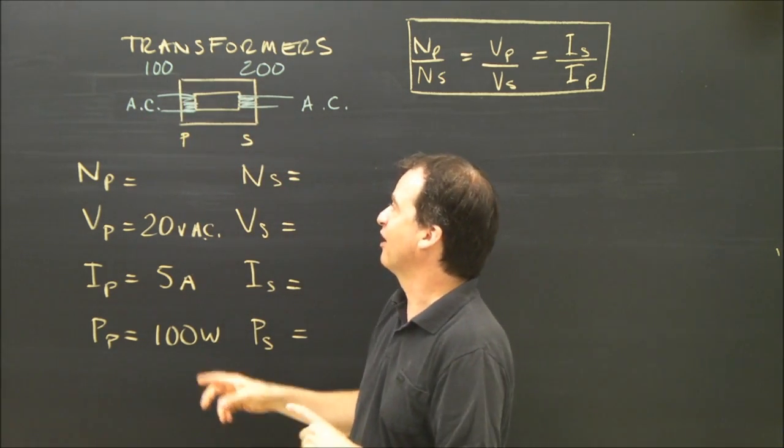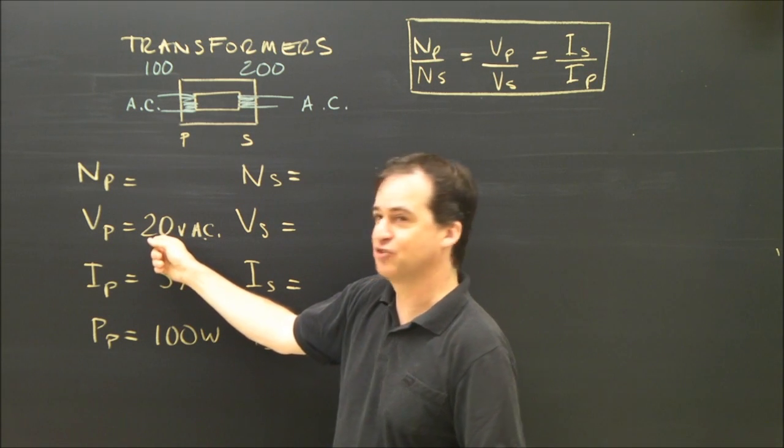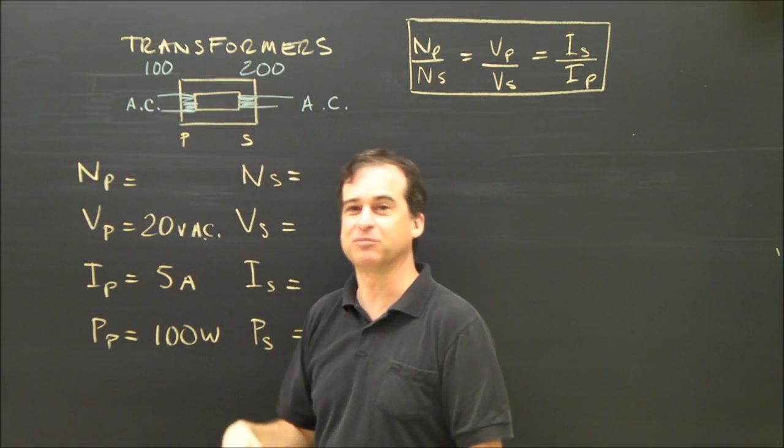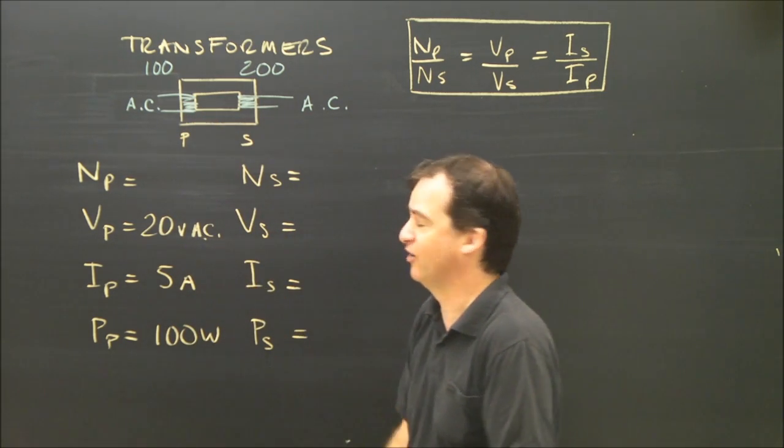That tells me a lot. I can already tell that if the voltage on this side is 20, the voltage on the secondary side is going to be 40 because of the ratio. But sometimes, as I said, the numbers are complicated. You have to calculate it.